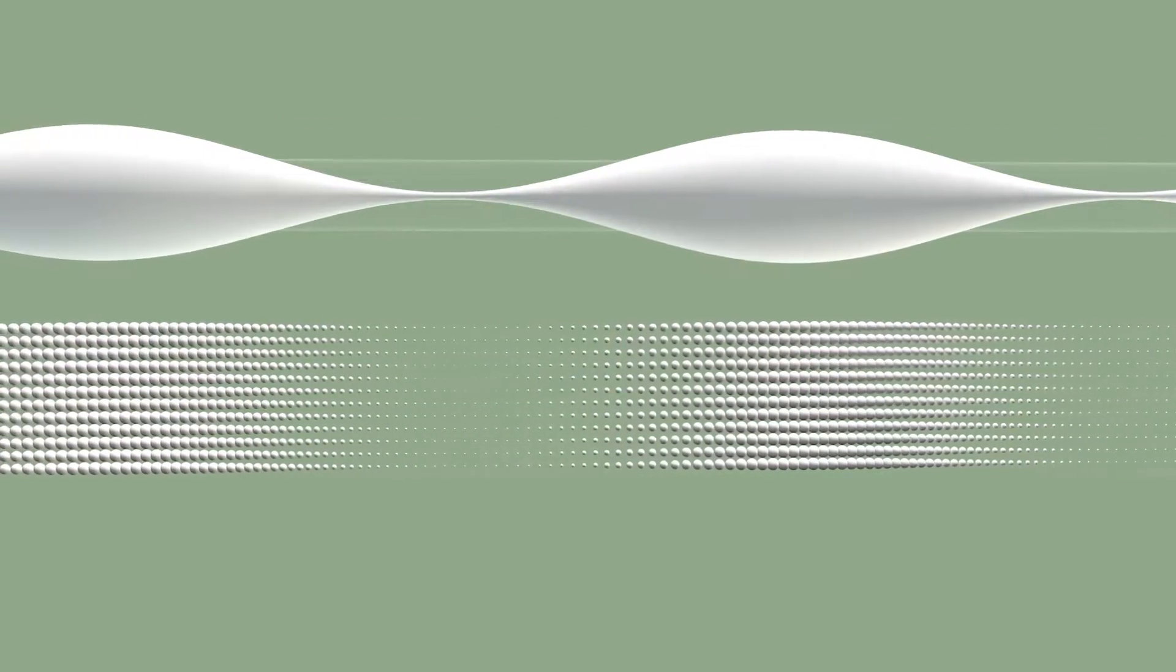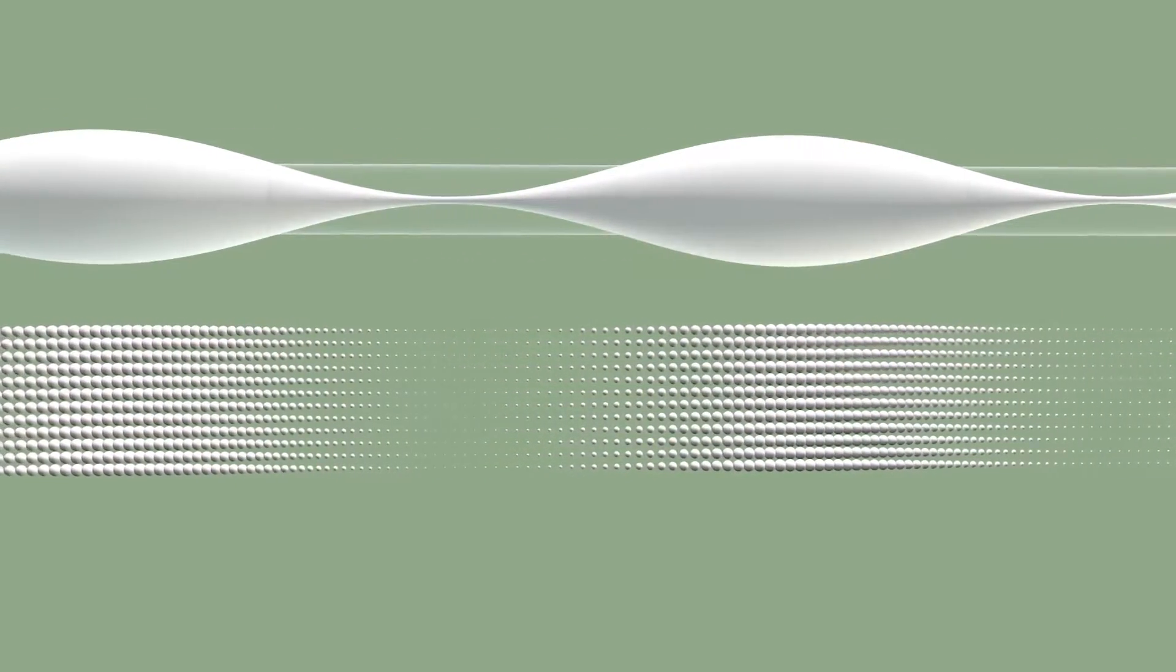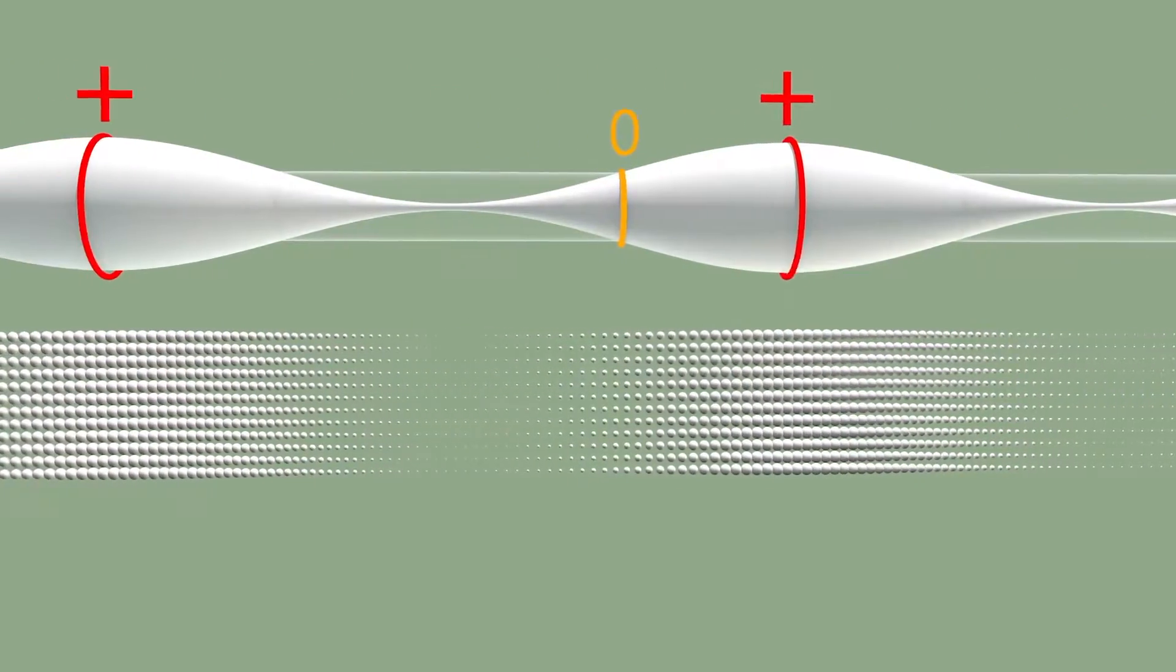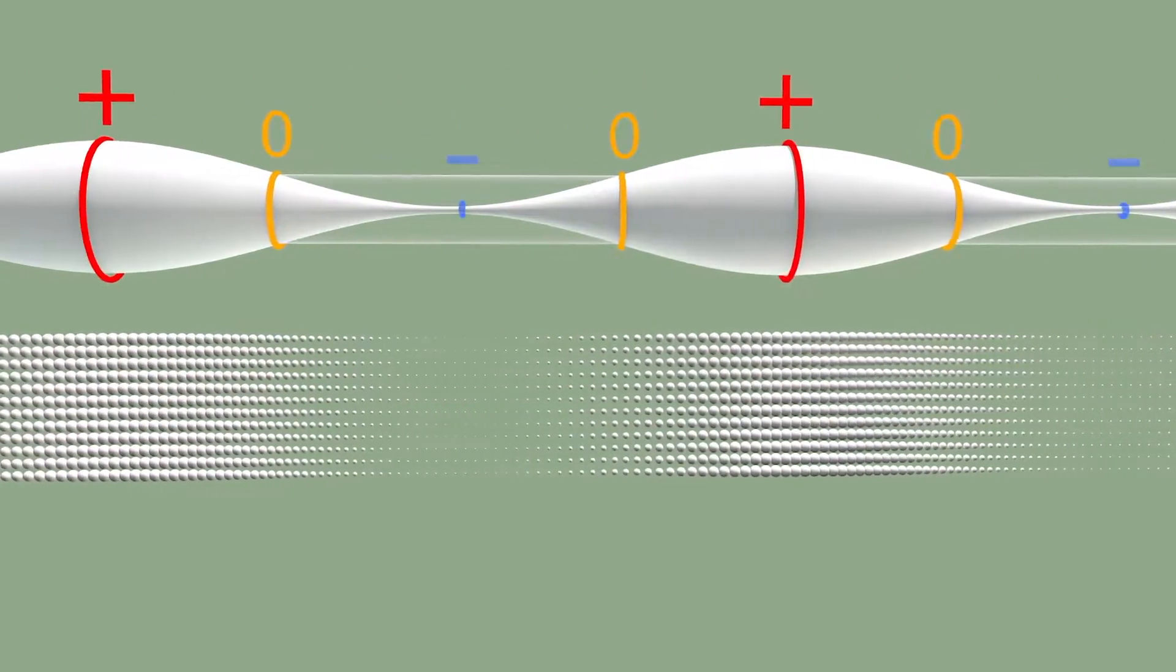The pressure along the wave cycle is sometimes zero, sometimes maximum in one direction, then again zero, and then again maximum in the other direction.